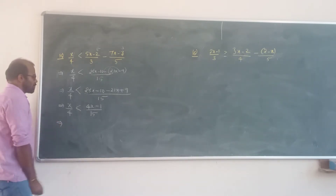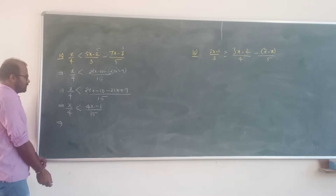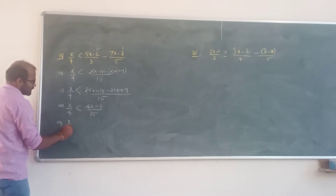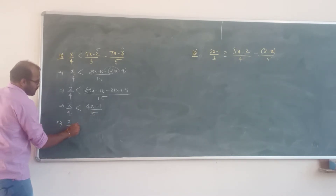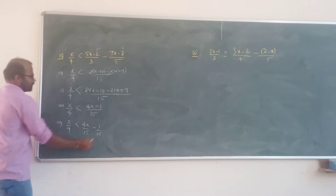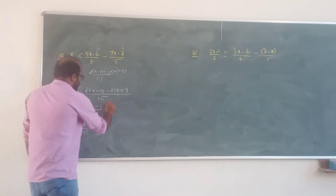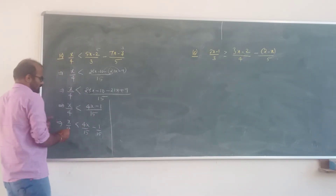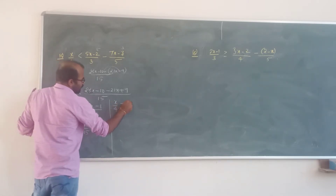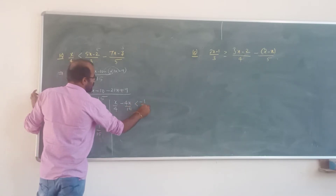So, x by 4 less than 4x minus 1 divided by 15. We will separate: x by 4 is less than 4x by 15 minus 1 upon 15. So x by 4 minus 4x by 15 is less than minus 1 upon 15.